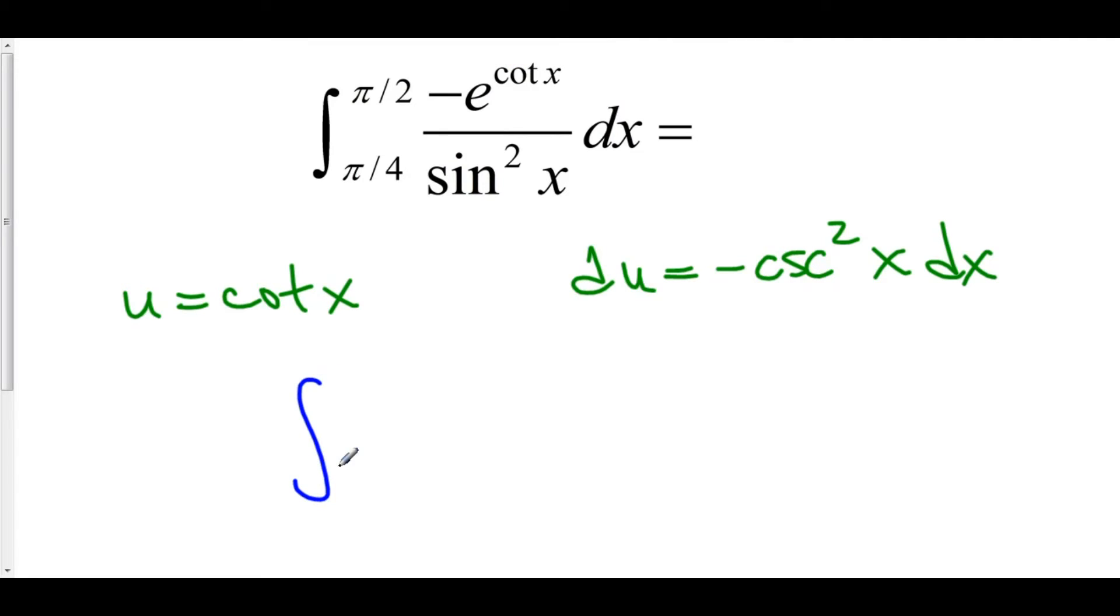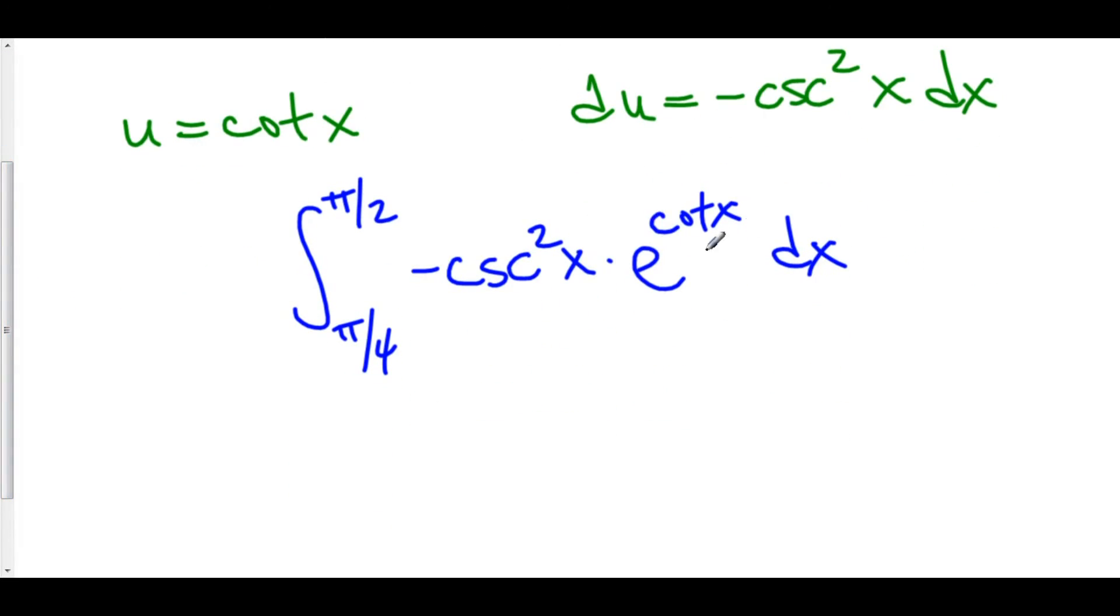This is really the integral from pi over 4 to pi over 2 of negative cosecant squared x, because negative 1 over sine squared is negative cosecant squared, times e to the cotangent x dx. That makes things so much easier. Look, I've got my u up in the exponent of e. And du is exactly what is written here. I don't even have to alter du whatsoever. I've got my negative cosecant squared x dx.